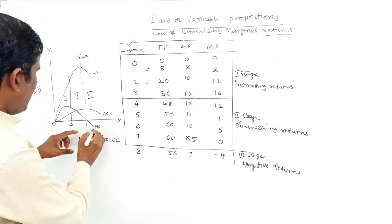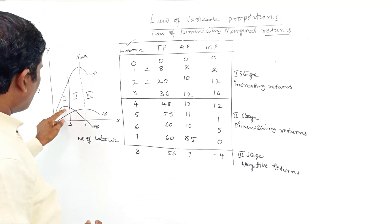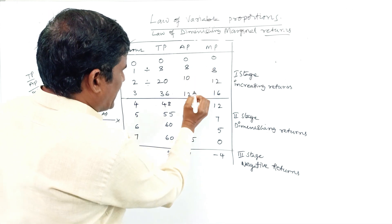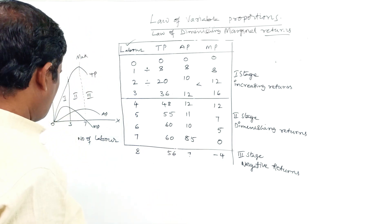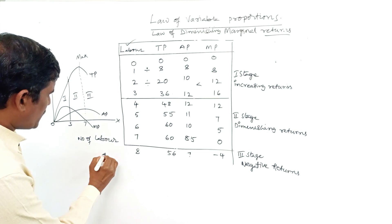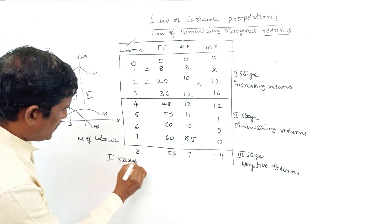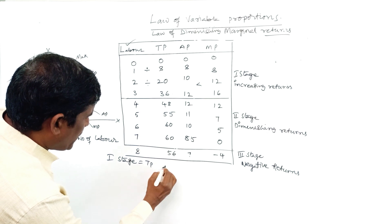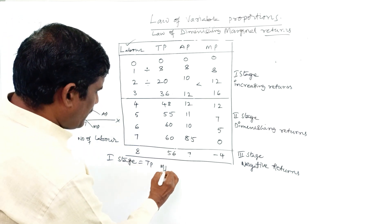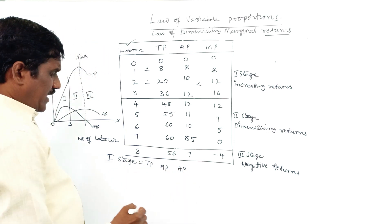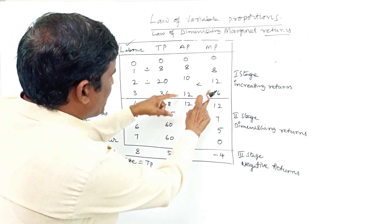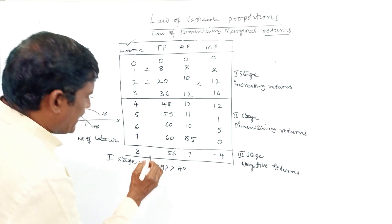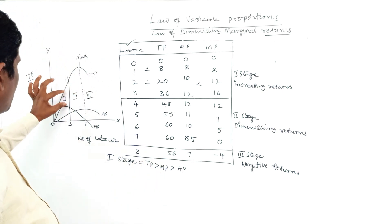For AP and MP: at the initial stage in the first stage, MP is greater than AP. The values 8, 12, 16, 14 show that marginal production is greater than average production, and TP is greater than both MP and AP. This is the first stage.